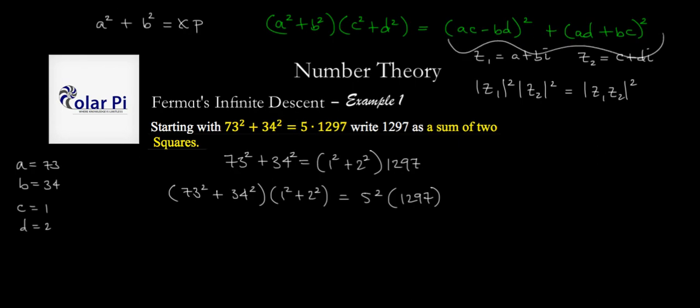So since this is again of this form, using the right hand side here we can write this here as the following, which is ac minus bd. So that's 73 times 1, so 73, that's ac, minus bd is 34 times 2, so that's 68, squared.